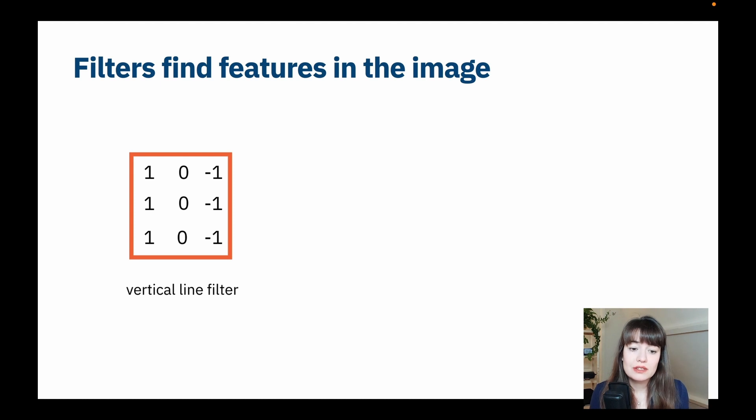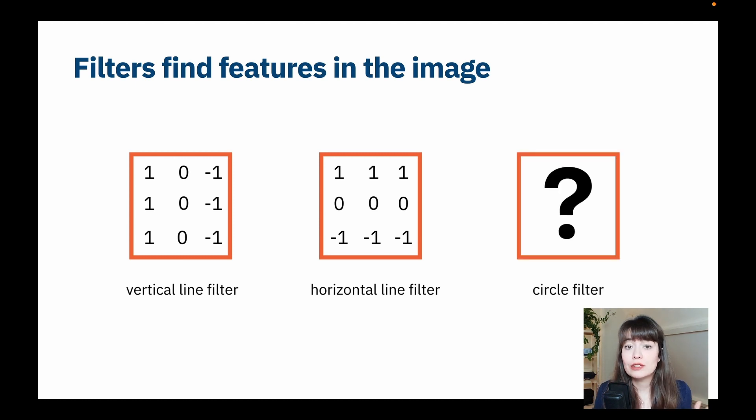So, let's say this is a vertical filter and this is a horizontal filter. But you might say, okay, then how do I, what kind of filter do I apply to my image to find circles or to find, I don't know, a nose, a dog's ear, a cat's tail? How does that even work?